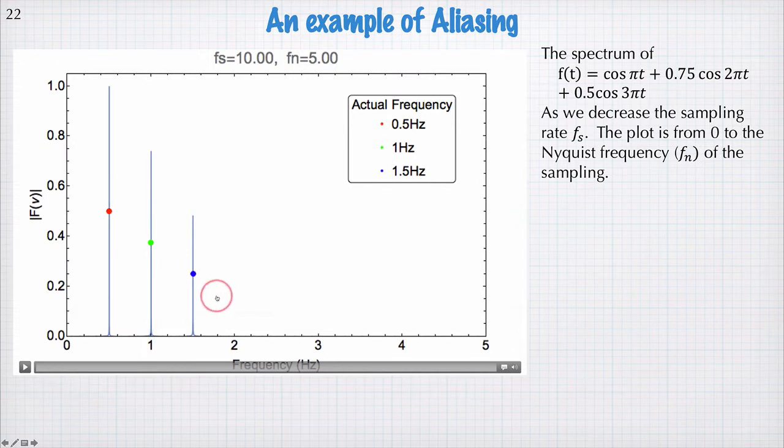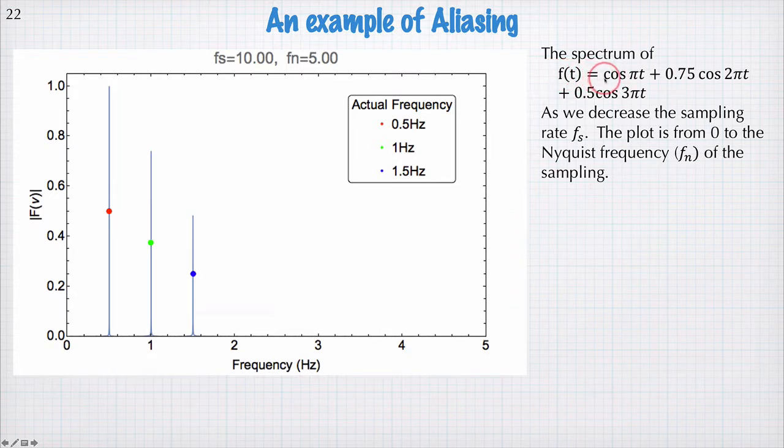What we have here is some data that I'll animate in a moment after I explain what is going on. What we have here is the spectrum of a function. The function is the cosine of pi times t plus three quarters of cos 2πt plus a half of cos 3πt.